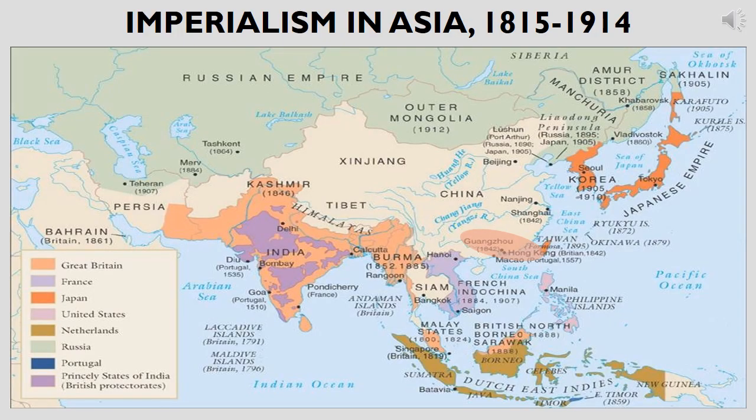The next several slides present the locations in the Eastern Hemisphere most targeted by imperialistic nations during the age of imperialism throughout the 19th and early 20th centuries. This specific slide shows the increase in European imperialism throughout Asia. Note the key to the bottom left of the slide so you can see the array of European states that came to dominate the politics, economics, and in some ways the culture of some of Asia's oldest civilizations.